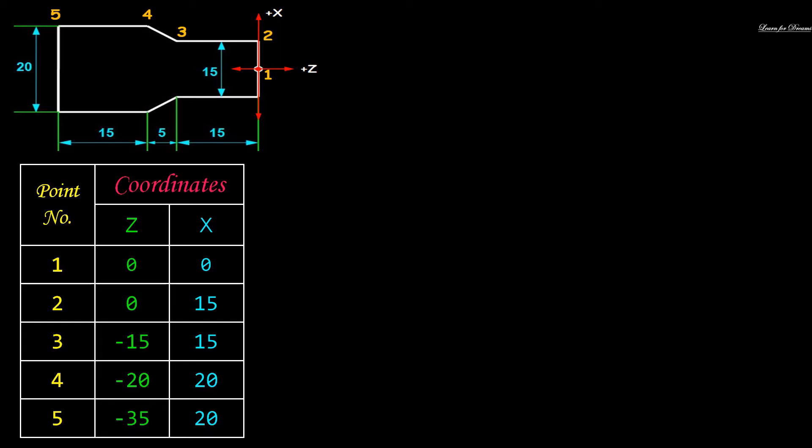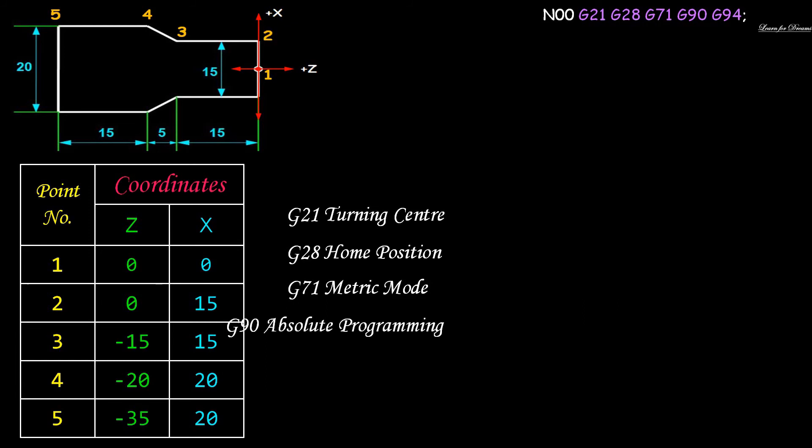Now let's start with the actual programming. The first line is N00 G21 G28 G71 G90 and G94. N is a block number, we have already discussed the format for writing a block. G21 is for turning center, G28 is for home position, G71 is metric mode, G90 is absolute programming, and G94 is feed rate in mm per minute.